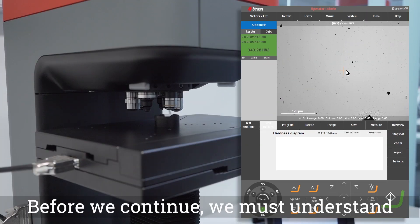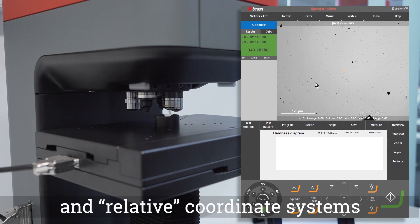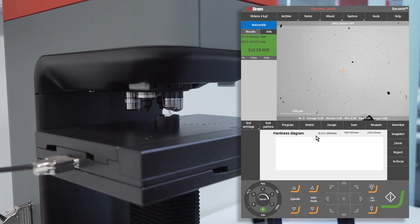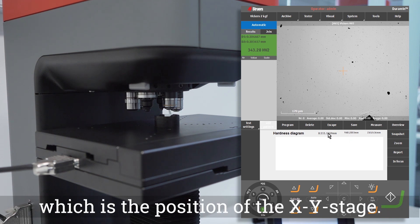Before we continue we must understand the difference between absolute and relative coordinate systems in the Duramin software. The coordinates shown in the main screen indicate the absolute coordinate system, which is the position of the XY stage.